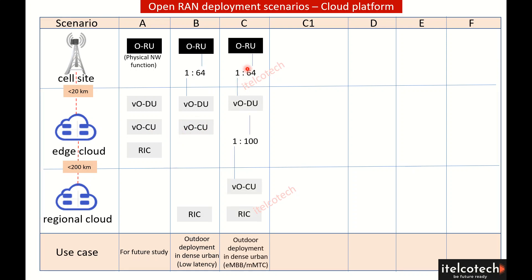Another widely recognized option is Scenario C, where the DU is at the edge cloud while the CU is at the regional cloud.